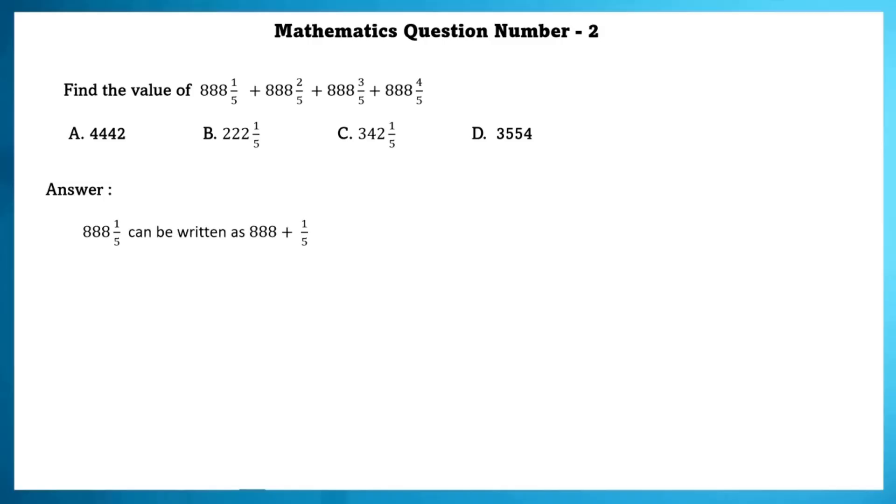888 1 by 5 can be written as 888 plus 1 by 5. Let us rewrite the given equation in this way. So 888 plus 1 by 5 plus 888 plus 2 by 5 plus 888 3 by 5 plus 888 plus 4 by 5.